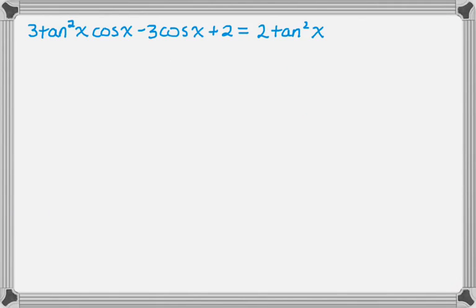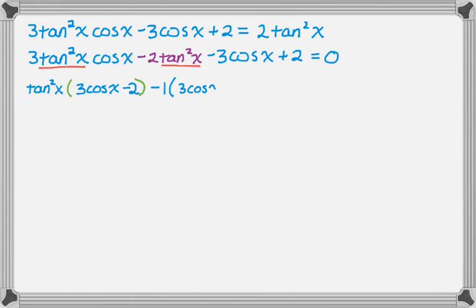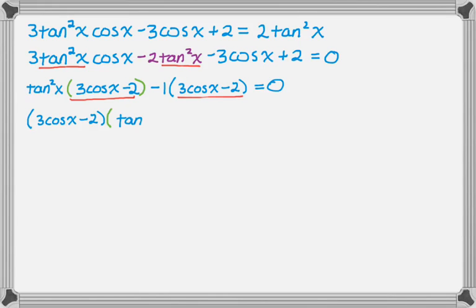One more problem. Here I have 3 tan squared of x times cosine of x minus 3 cosine of x plus 2 equals negative 2 tan squared of x. I move everything to one side by subtracting 2 tan squared of x from both sides. Looking at the first two terms, there's a tan squared in both, so I factor that out. From the second two terms I factor out a negative 1 so the expression inside the parentheses matches — which is the goal when factoring by grouping.